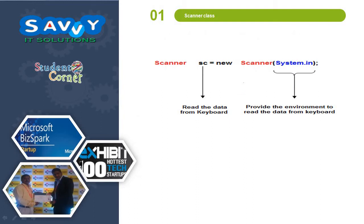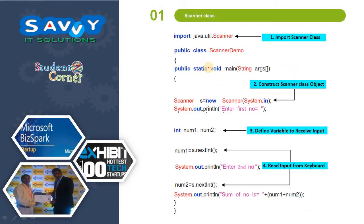This is the constructor where we are creating an object for Scanner class. Firstly we are importing the Scanner class using import java.util.* or java.util.Scanner. After that we are creating an object for the Scanner class: Scanner sc = new Scanner(System.in). This System.in provides the environment to read the data from the keyboard. sc reads the data from the keyboard. I will take a small example program to understand how the Scanner class works.